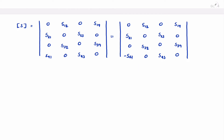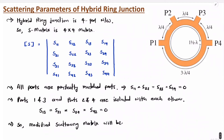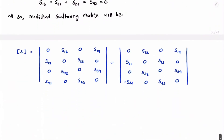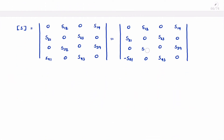Applying input at port 2, that input is equally bisected towards port 3 and port 1. Both sides have a lambda by 4 spacing giving 90-degree phase each. Therefore S12 equals S32, meaning output at port 1 and output at port 3 are equal for input at port 2. We replace S32 by S12 in the matrix.